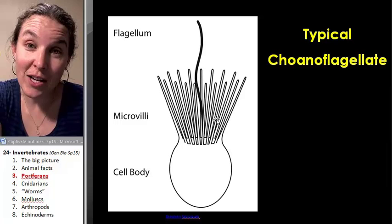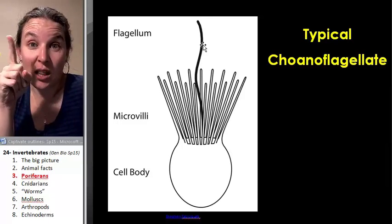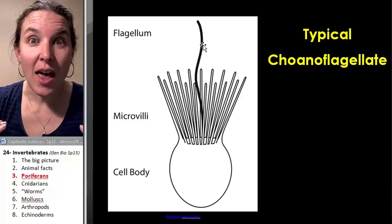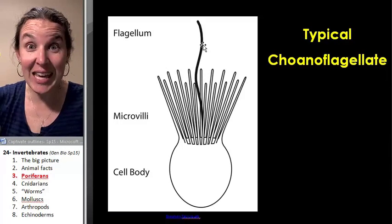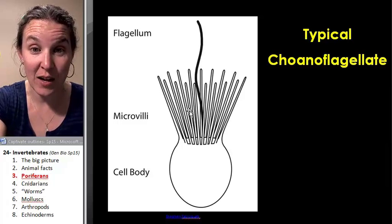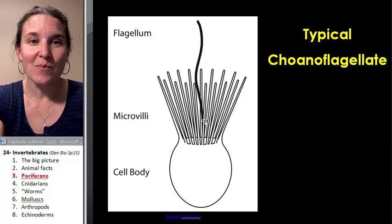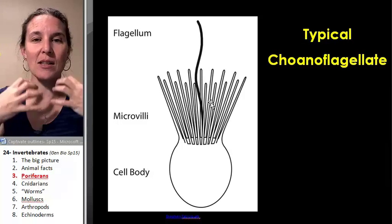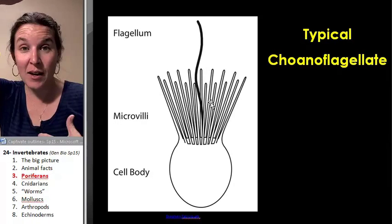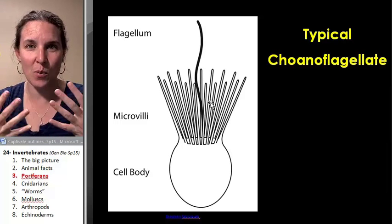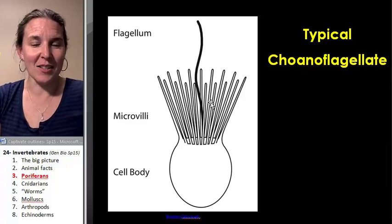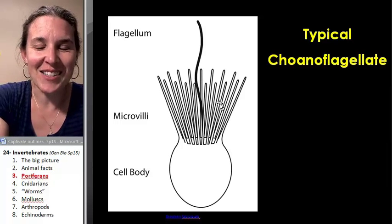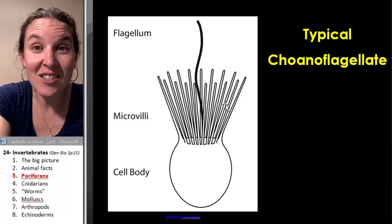Well, if they were cool like choanoflagellates, they would have a collar. Choanoflagellates use that flagellum to create currents in the water, and that draws stuff in to the cell — they filter feed. They trap material from the water in those little bristles, then they consume whatever gets trapped. The flagellum creates the currents that bring the water in. Those things are awesome. They're single-celled protists.